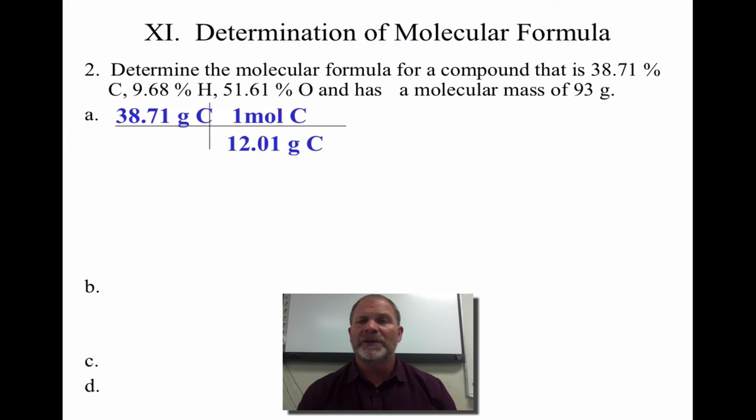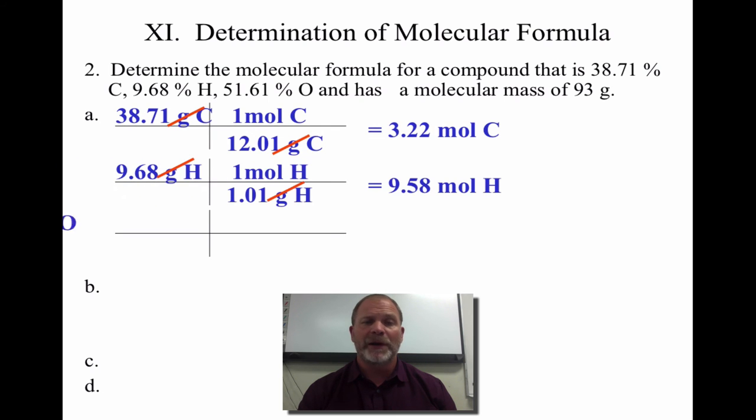I'm just going to roll right into my moles, get them to moles right away. So I use my 12.01 grams per mole for carbon. Grams cancel out, and I get moles of carbon. Do the same thing for my hydrogen, and I do the same thing for my oxygen.